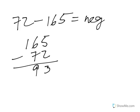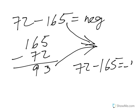And so putting together these two things, that my answer is negative and the difference is 93, I see that 72 minus 165 is negative 93.